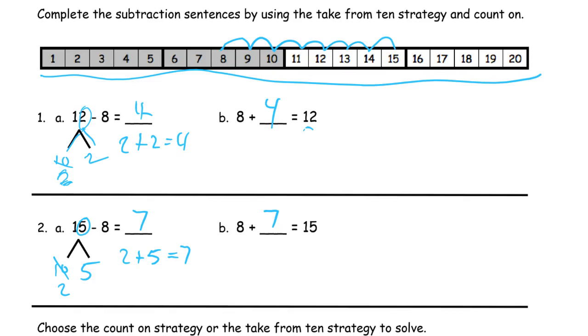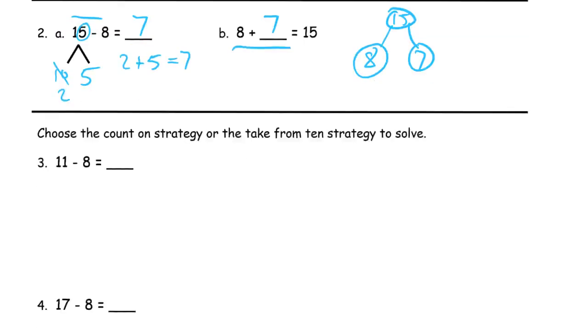And you should have the same answer either way because they both go for the same number bond. 15. If one part is 8, the other is 7. Whether you're adding them or taking the whole apart, you're going to have 7 for the other part. If 15 is the whole and 8 is one of the parts.